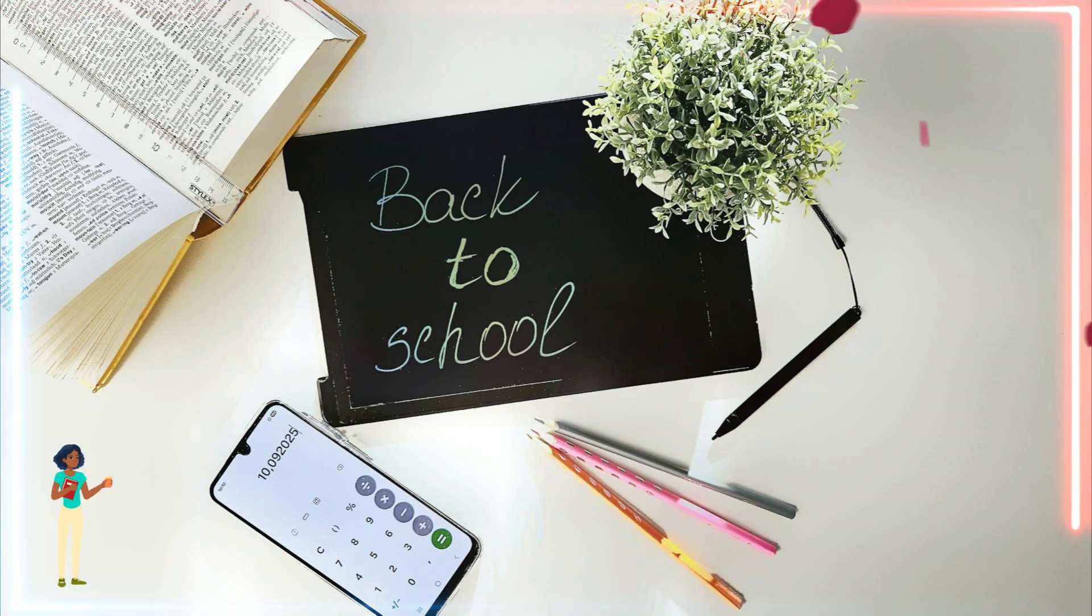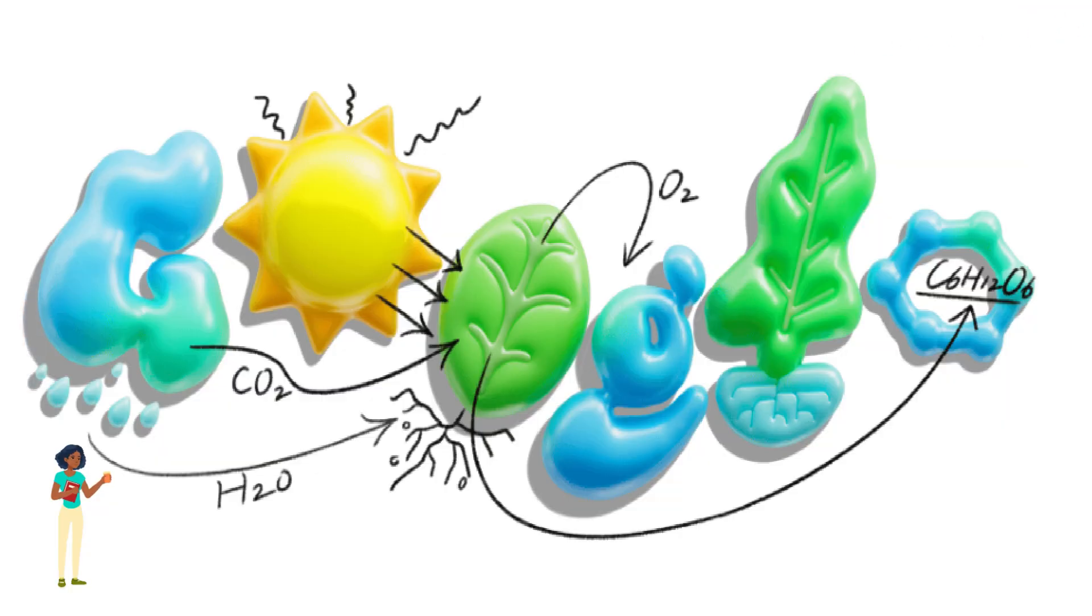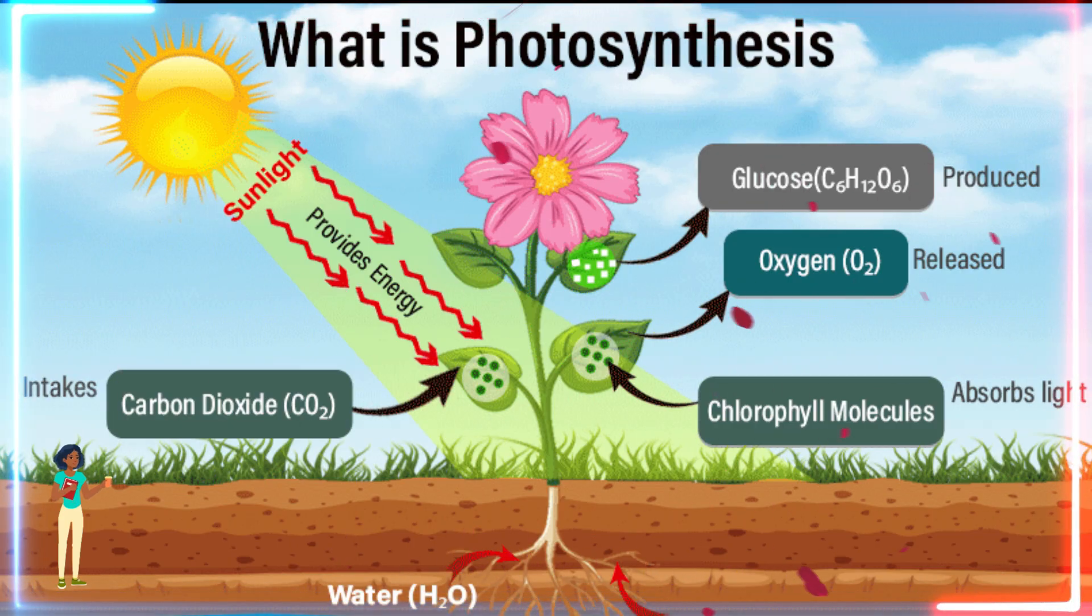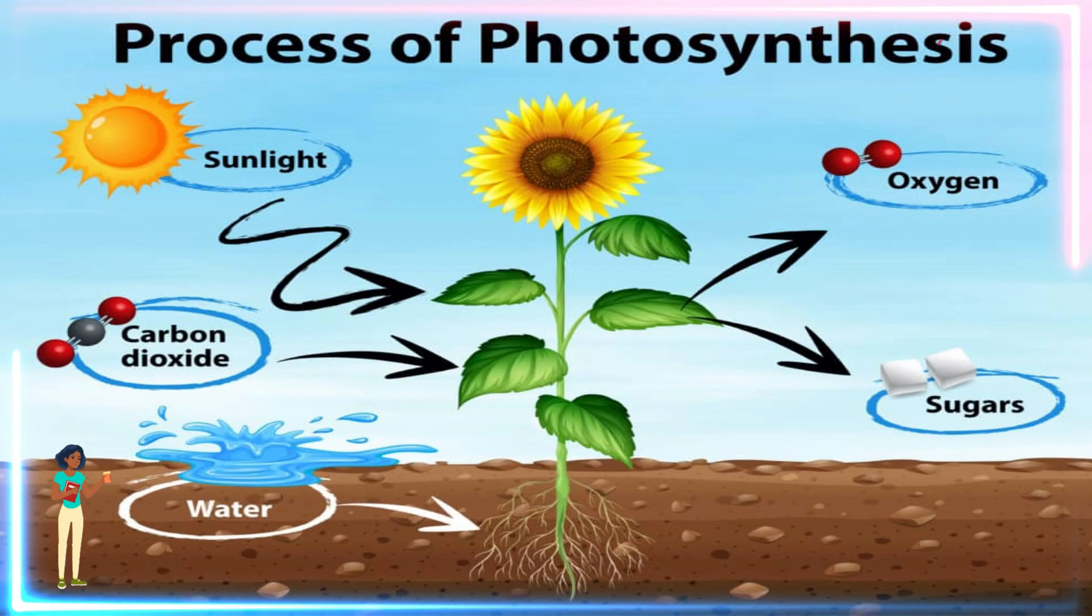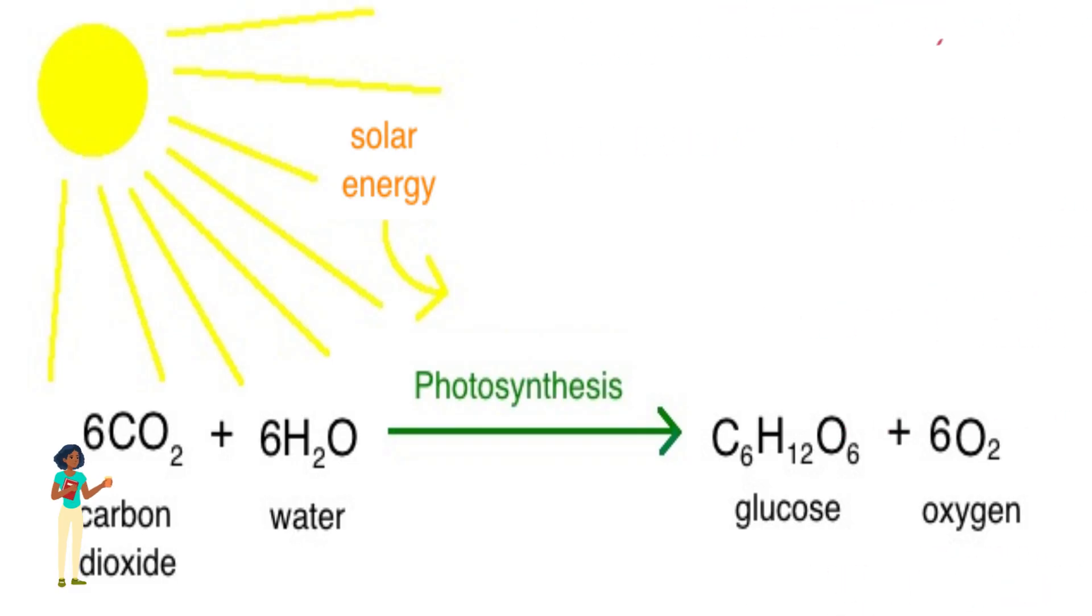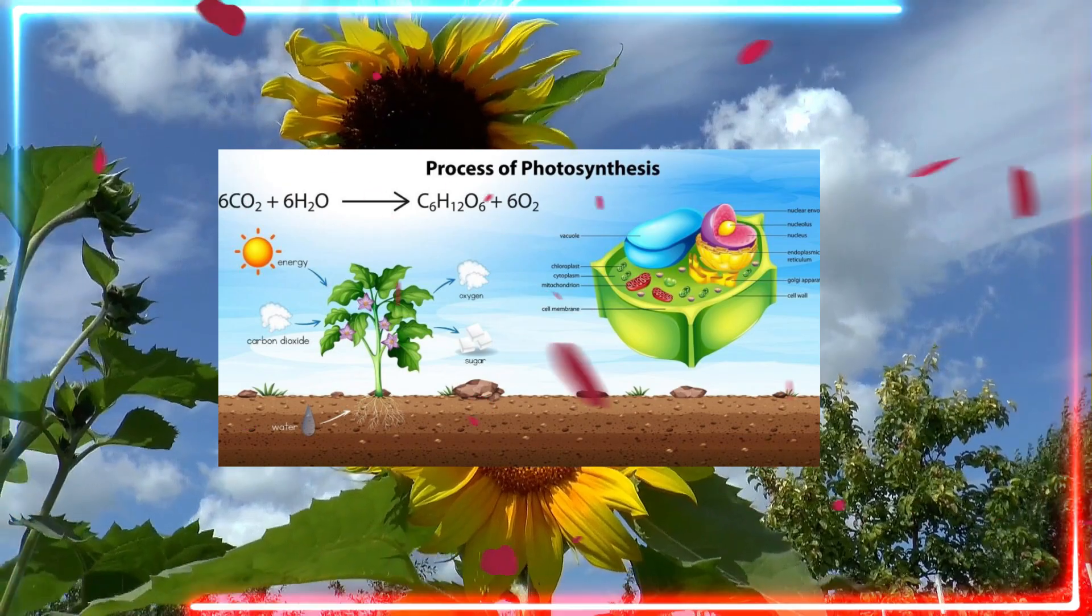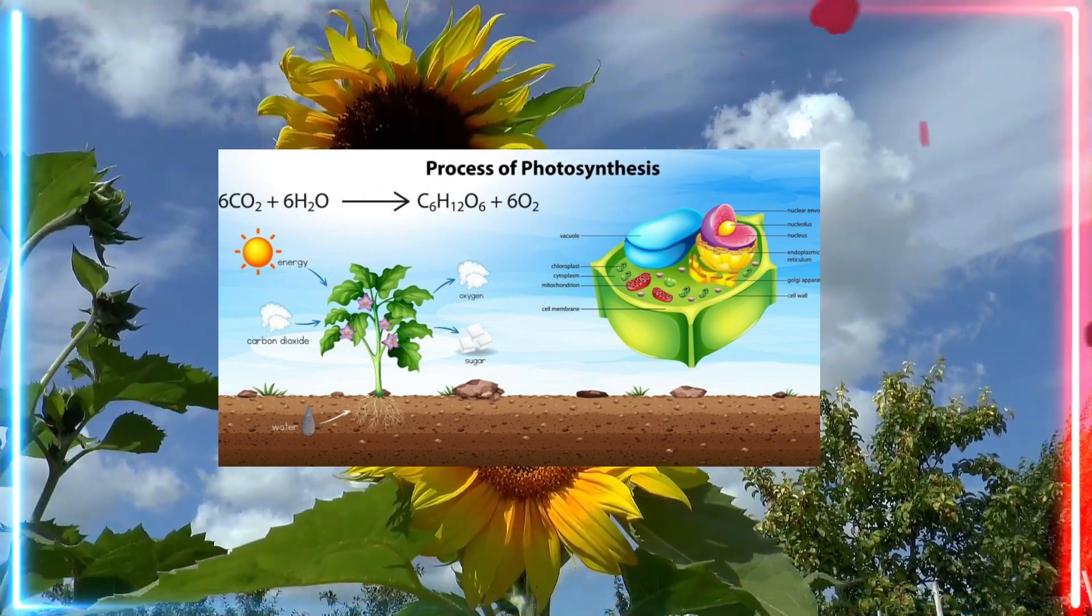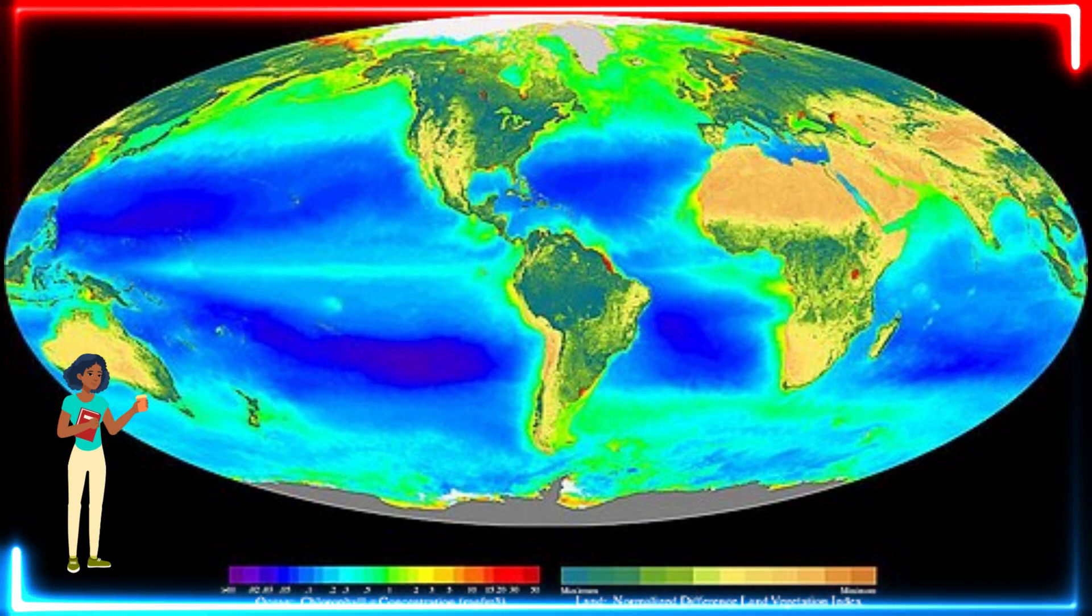This back to school doodle celebrates photosynthesis, the process in which plants use light energy to transform carbon dioxide and water into organic molecules like glucose. Oxygen is then released as a byproduct. This natural phenomenon is essential in supporting life on Earth, allowing many living organisms to breathe.